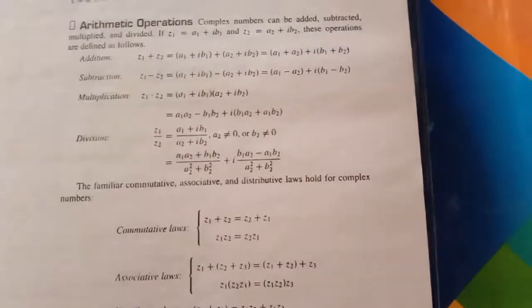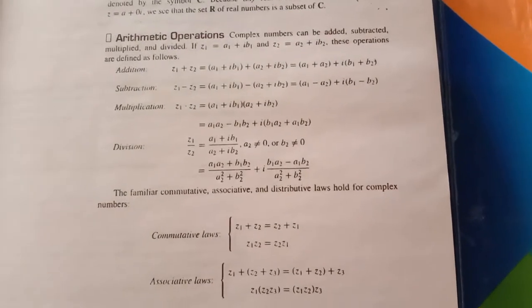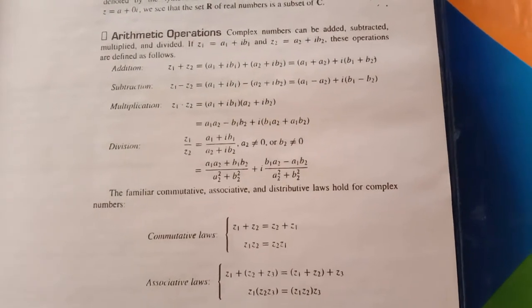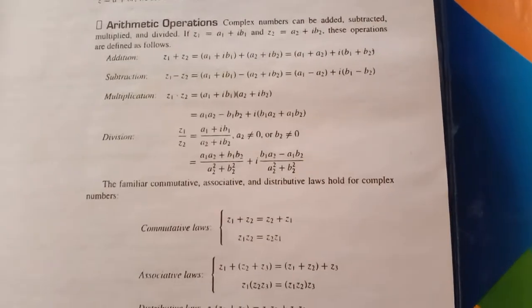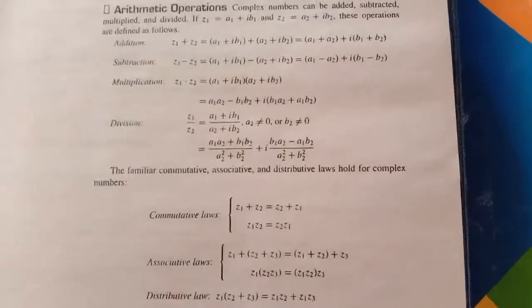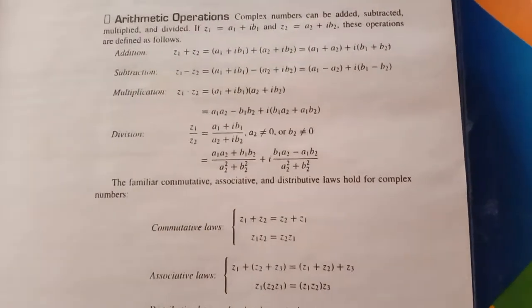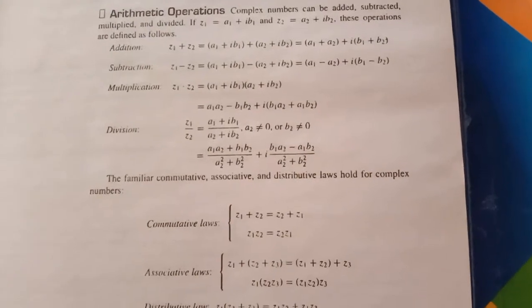Phir is tarah ham division bhi karenge. Division kis tarah karenge ke z1 divided by z2 is equal to a1 plus iota b1 divided by a2 plus iota b2, lakin yaha par ek restriction yeh hai ke a2 is not equal to zero or b2 is not equal to zero. Dono zero nahi hona chahiye at a time, dono zero nahi hona chahiye.